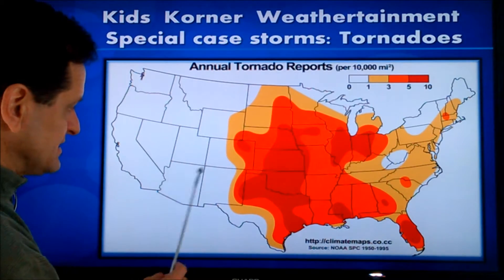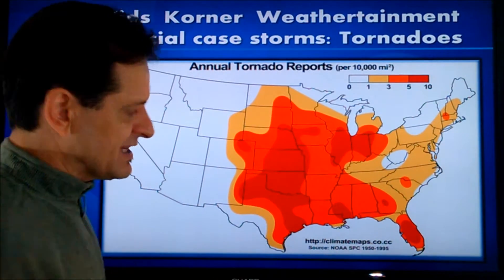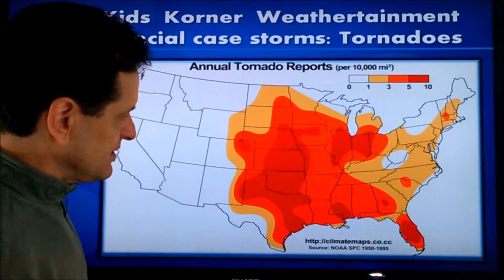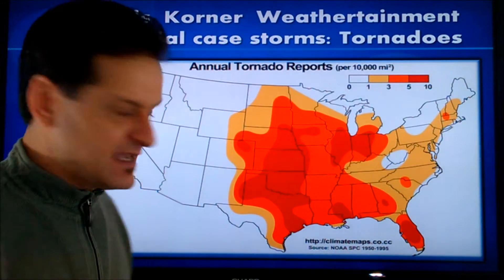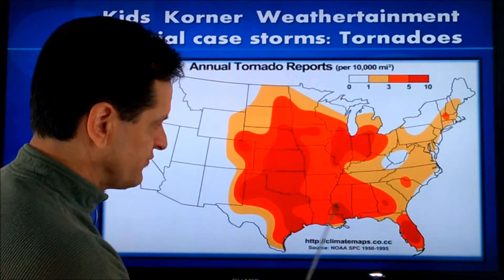Let's talk about where tornadoes occur and why. It's possible to see one anywhere in the country, but the Rocky Mountains make it difficult for tornadoes to form because of their elevation. The same can be said for the Appalachian Mountains on the eastern part of the country. The middle part of the country is the most likely area. That's because that's where the coldest of the cold air can come down from Canada without being stopped, and meet up with the warmest of the warm, humid air from the Gulf of Mexico. They meet up right in the bread basket, right in the middle of the country — and that's why that's referred to as Tornado Alley. They are so much more common there than in other parts of the country or the world. The United States sees the most tornadoes on average of any country in the world.